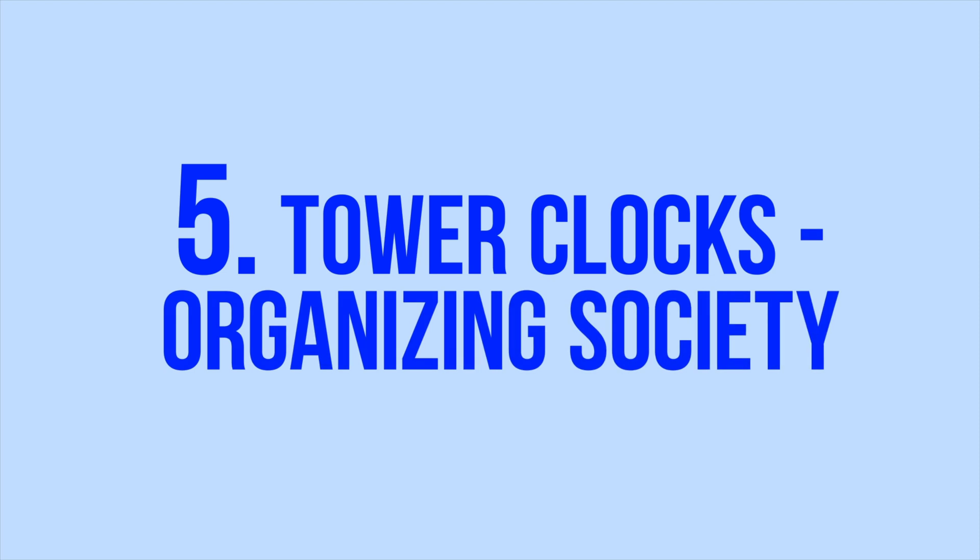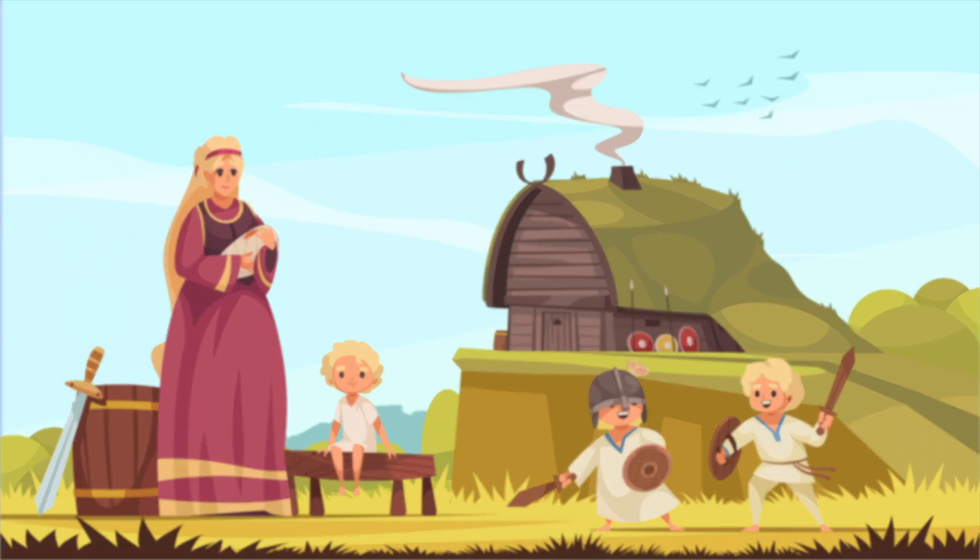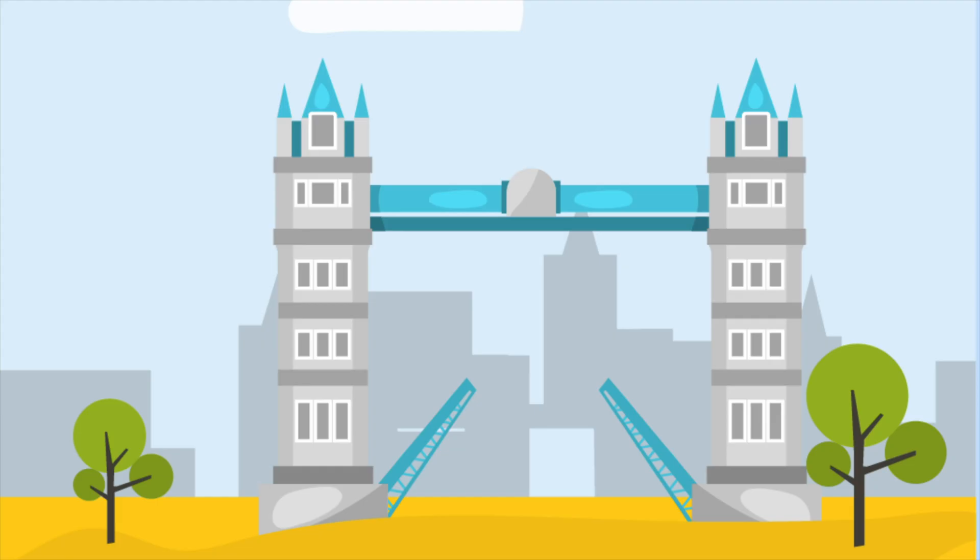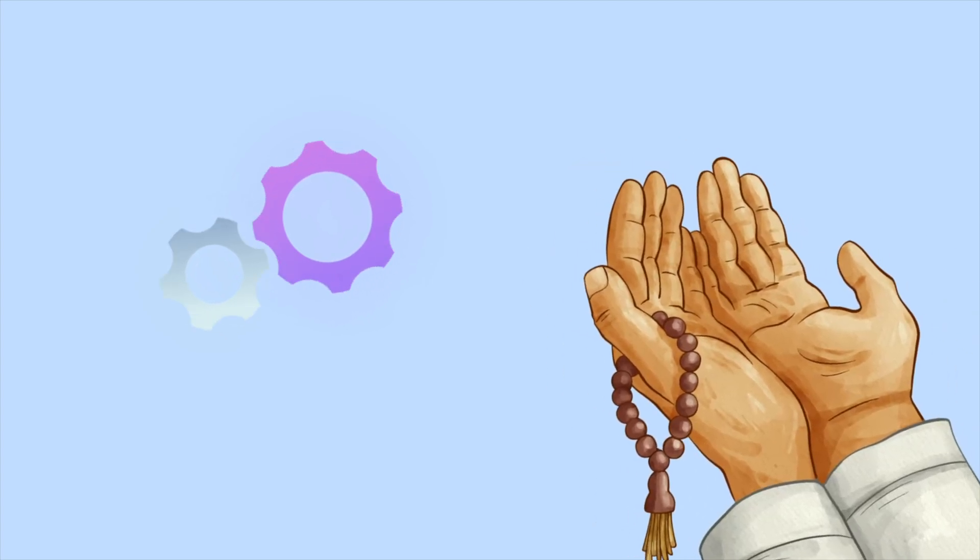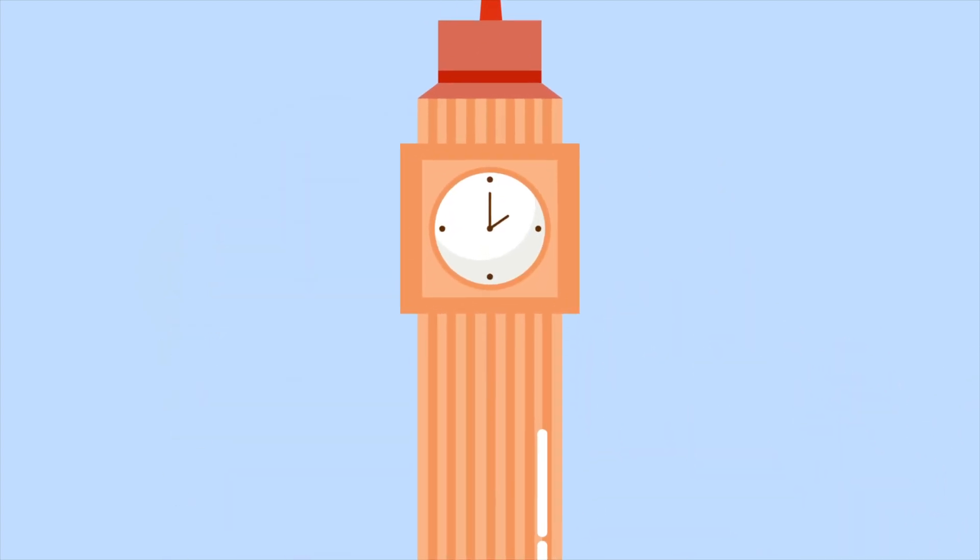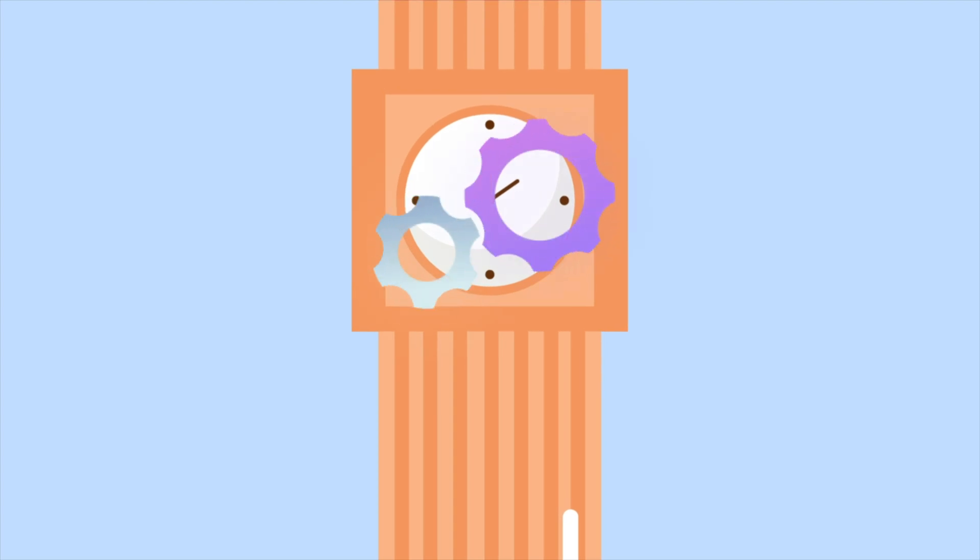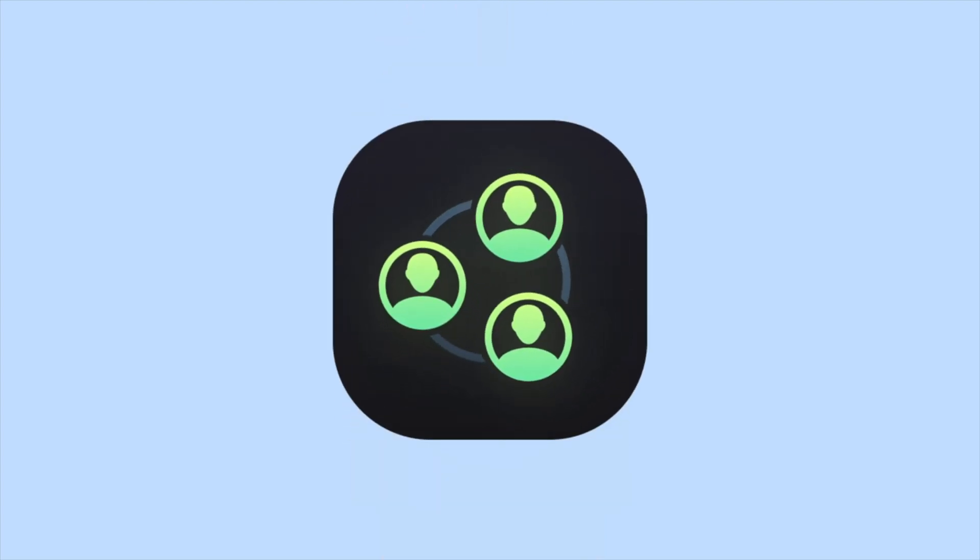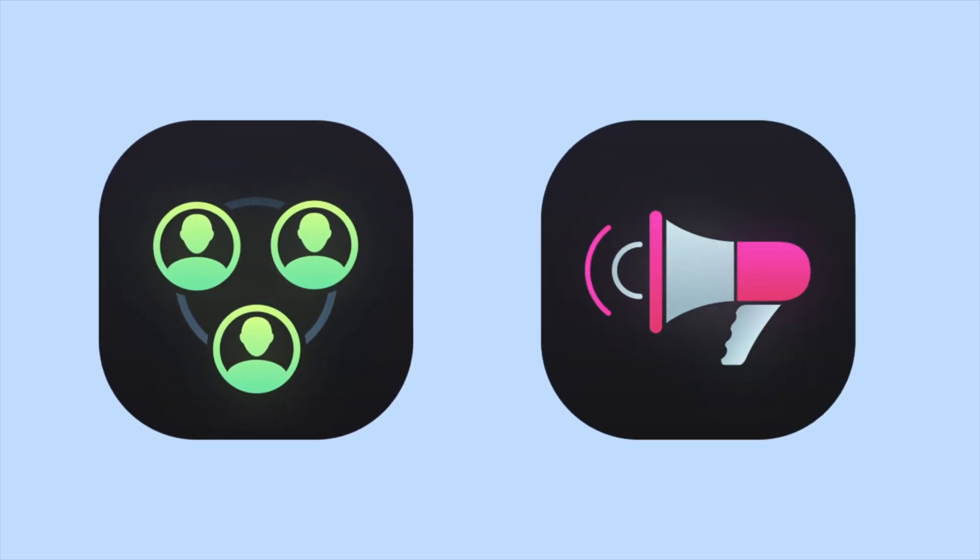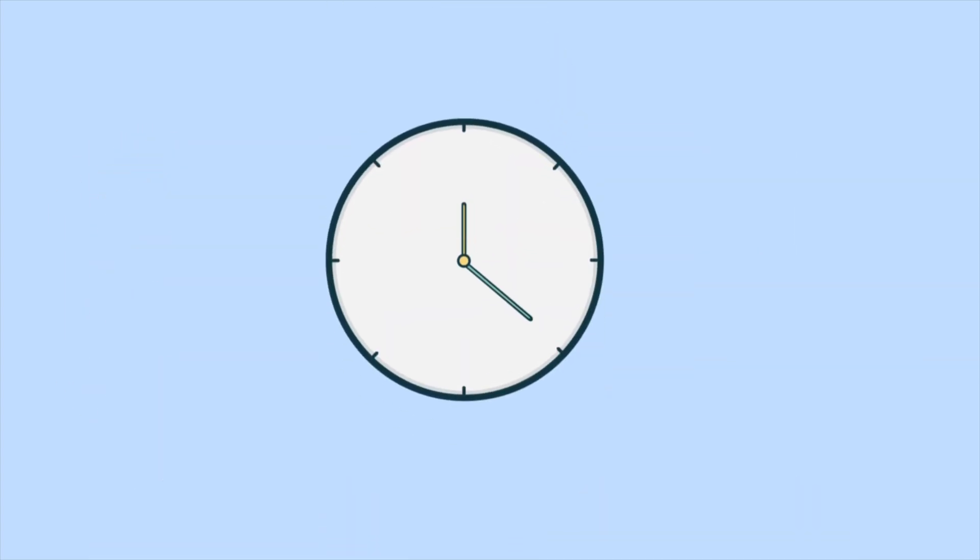Tower Clocks - Organizing Society. By the Middle Ages, the need for European communities to organize time more accurately increased. Tower clocks emerged in city centers and churches to signal work hours and prayer times. These clocks were massive and operated on a mechanical system that relied on weights and gears. They became a symbol of organized society, regulating people's lives through auditory signals, like bell chimes, alerting them to specific times throughout the day.